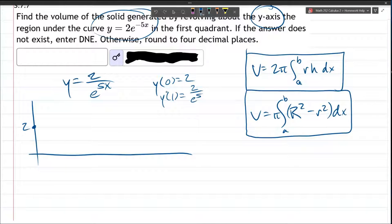e to the 5th, that's a pretty big number, somewhere around 200 or so. So that y value gets small quickly. So that's 2 over e to the 5th, right there, and that's at 1, and this function will continue to get smaller after that.